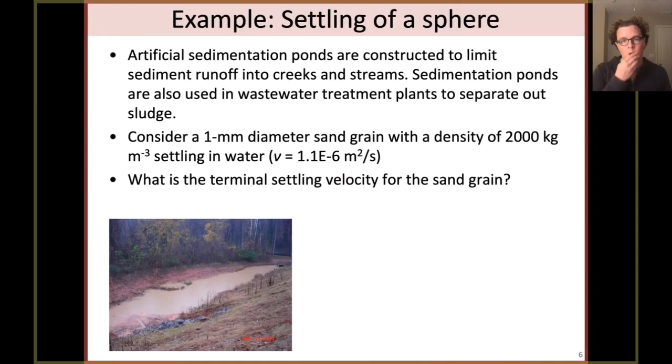As an example, we're going to look at settling of a sphere. What you see on the bottom left is a sedimentation basin. The idea here is that stormwater and the soil that it carries, the sediment particles it carries, come into the basin. And we want to design this basin so that the grains of sediment can settle out to the bottom before water would flow out. So we're going to consider what happens to a one millimeter diameter grain of sand with the given density settling through water with this given viscosity. The question here is what is the terminal settling velocity? In other words, how fast do we expect these grains of sand to be settling?